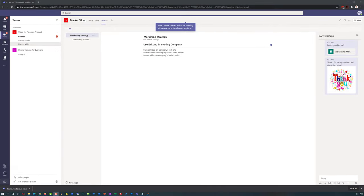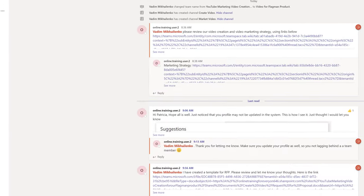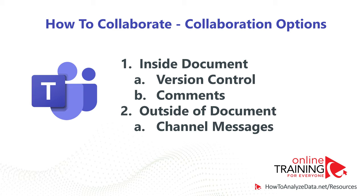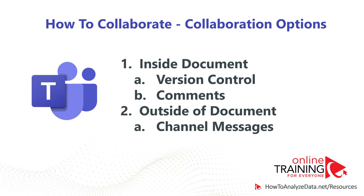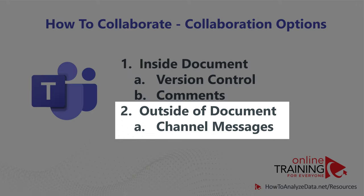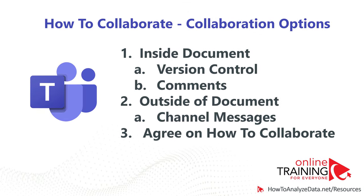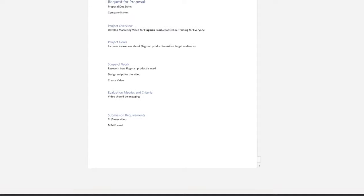Because Patricia targeted Vadim in her conversation, when Vadim logged in he saw two messages in the General channel. All he needed to do was click the link. There are two main ways to collaborate on a document in Microsoft Teams — you can use version control or comments inside the document, or put feedback in channel messages outside the document. It's always a good option to discuss with your team members which approach to use, especially with a large number of people, to organize and centralize feedback.